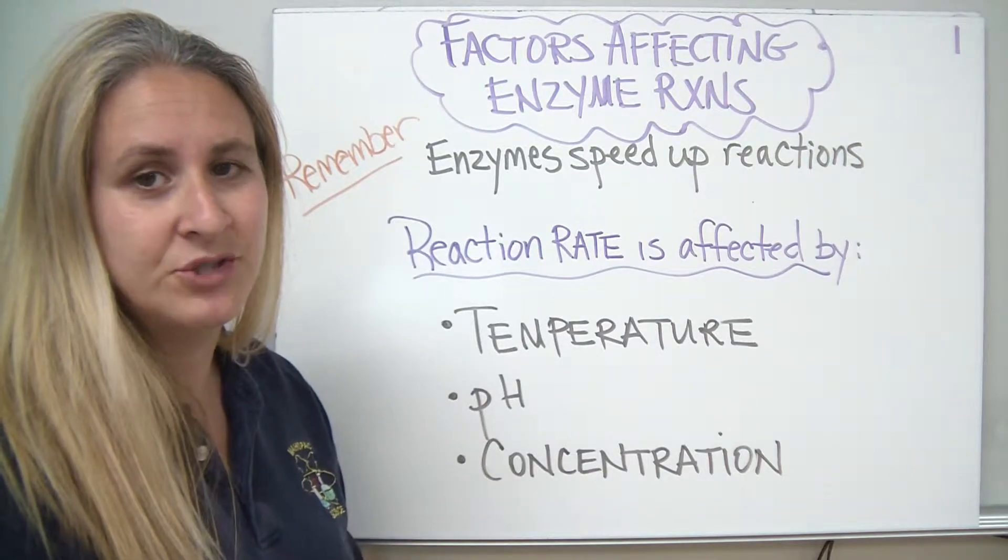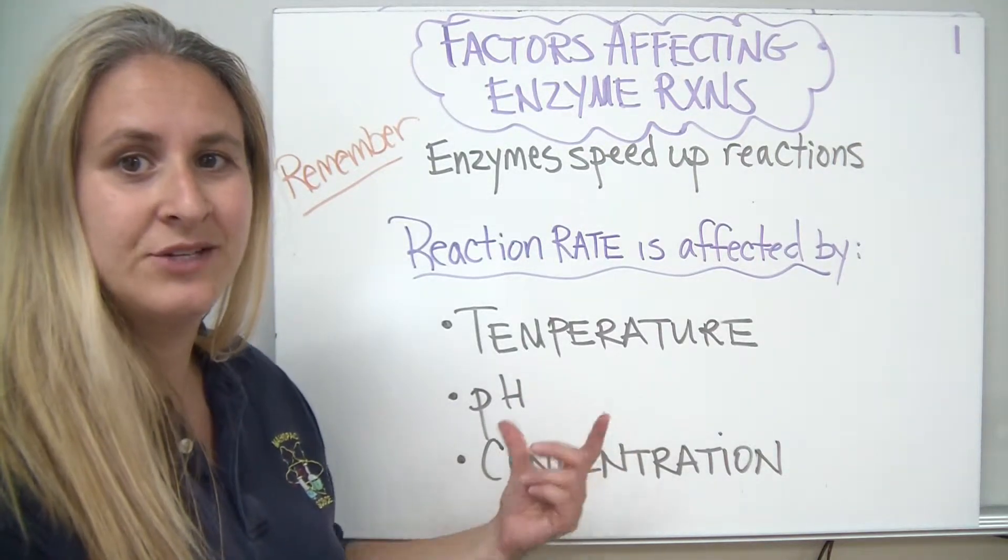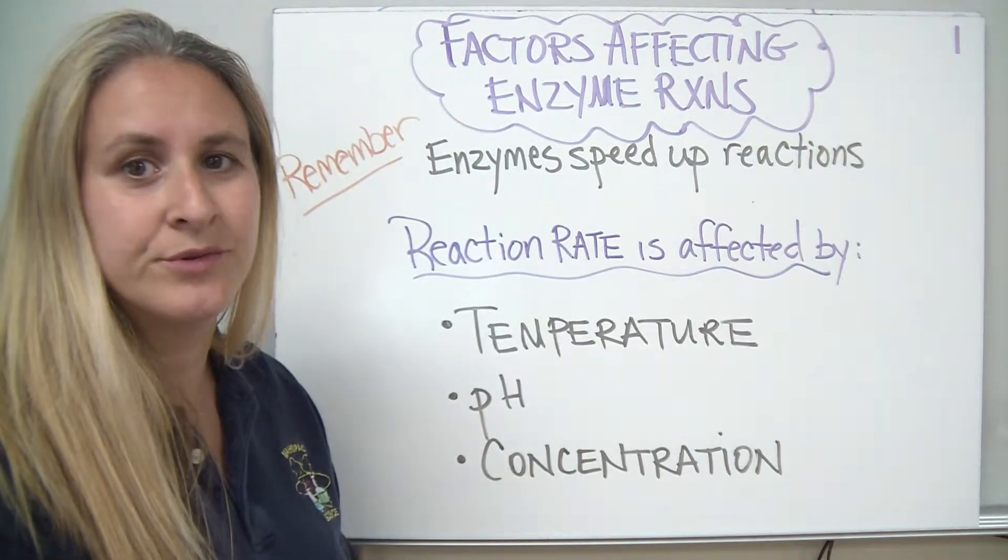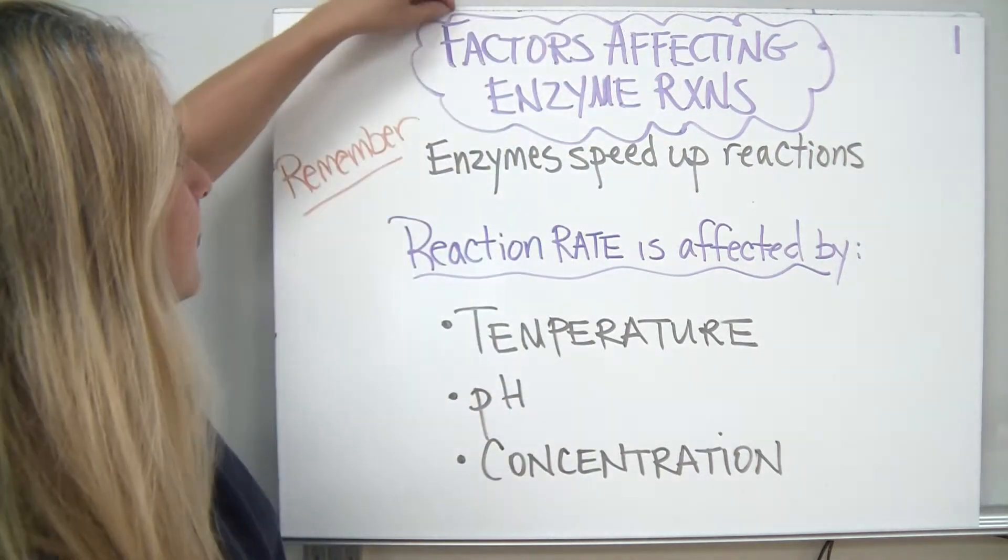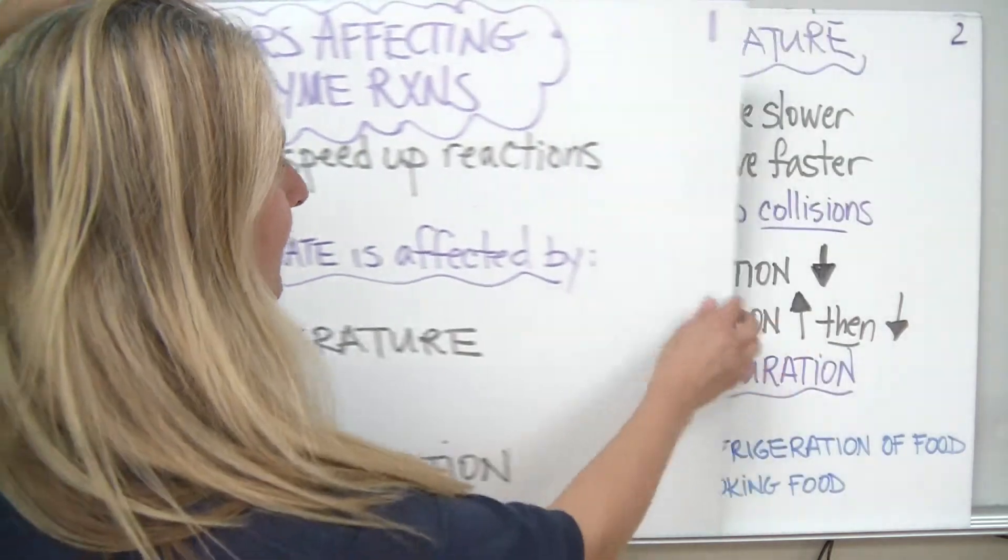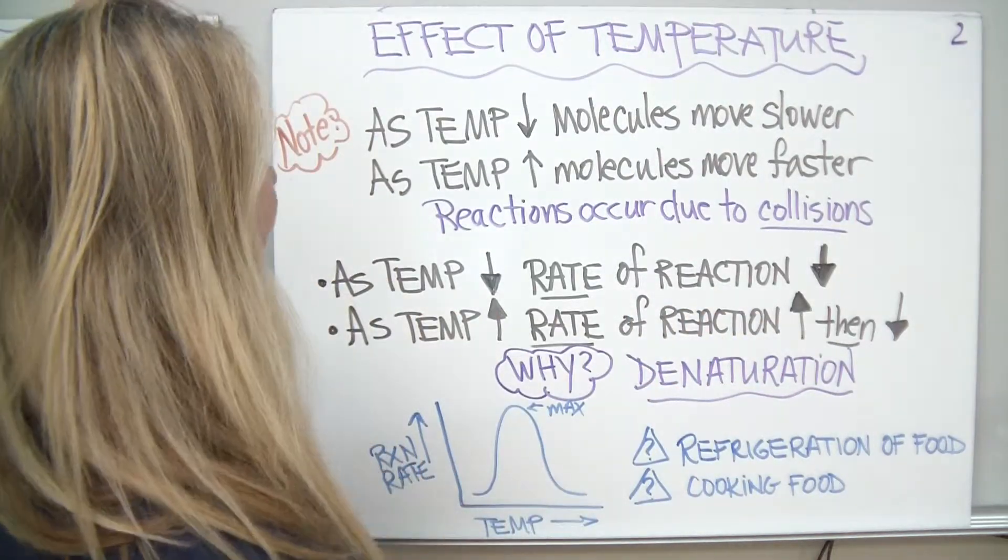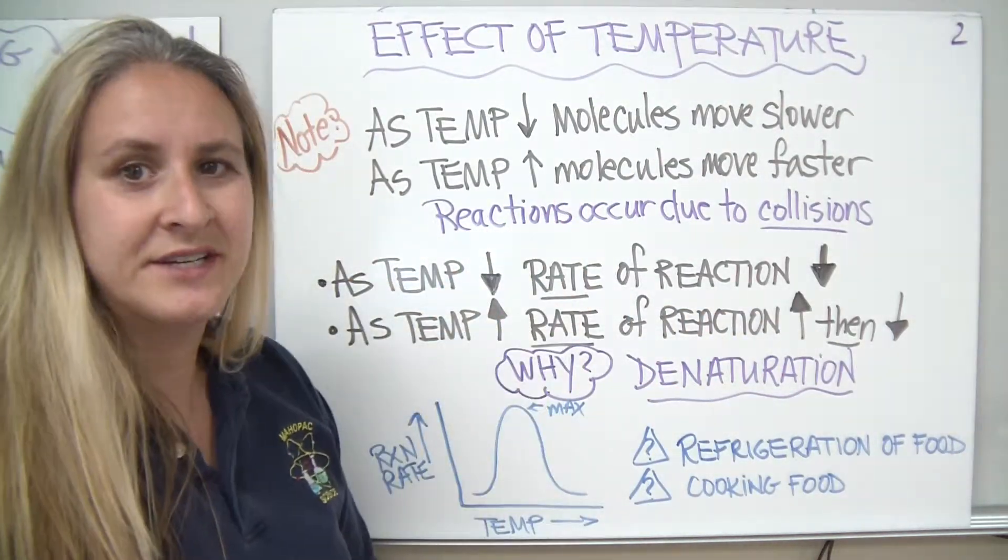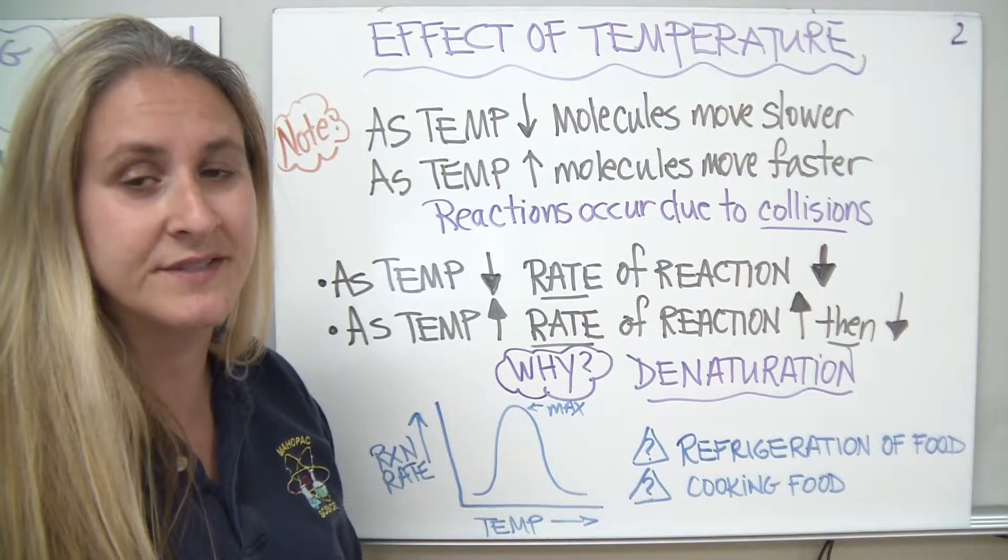We'll go through each of them individually in order to see how each of the factors can affect the rate of an enzyme-controlled reaction. The very first factor that we're going to discuss is the effect of temperature. How does temperature affect reactions?